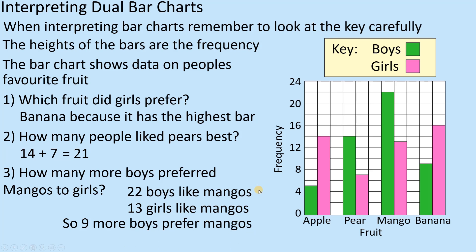Like many of these questions, it's not that difficult, but you've got to be very careful with the wording. They will mix the words to make sure your English understanding is solid as well as your maths. So just be very careful - make sure it makes sense. How many more boys preferred mangoes to girls? We're comparing those two numbers, and how many more means we subtract. Be very careful - these are marks you should be picking up in the exam.